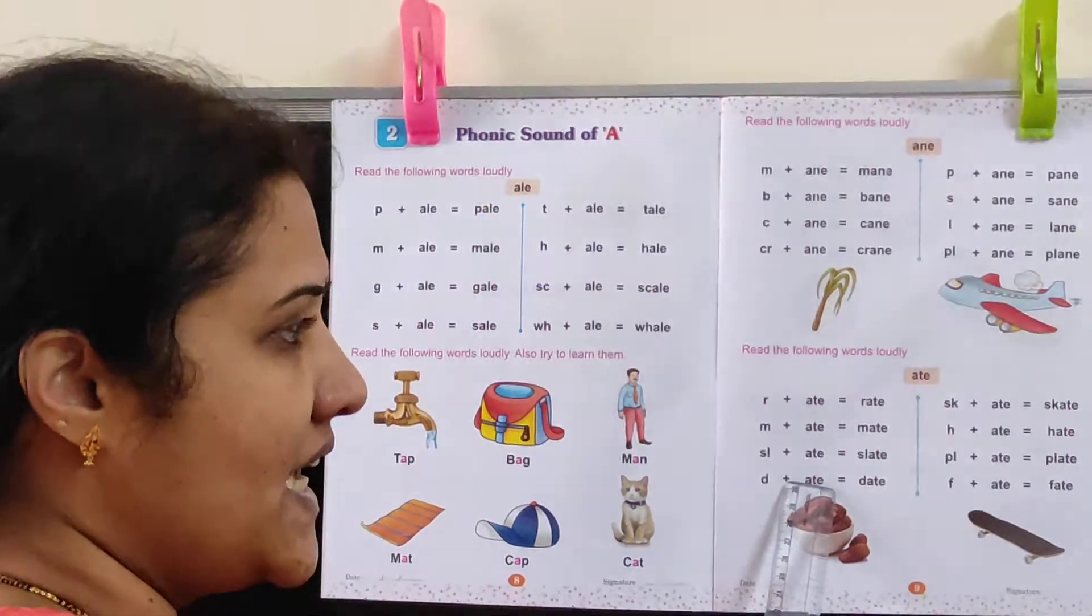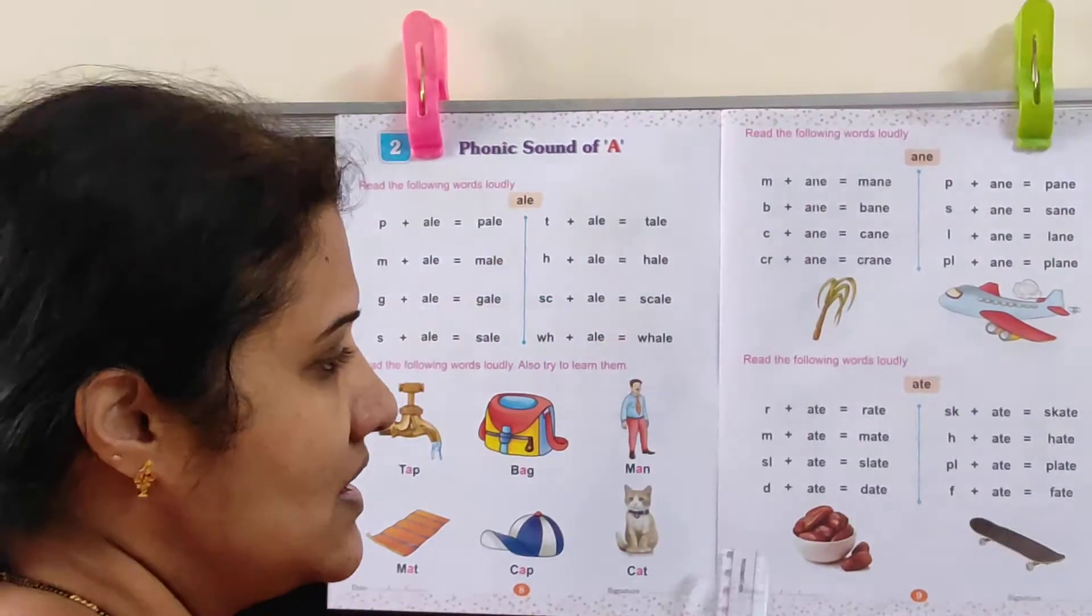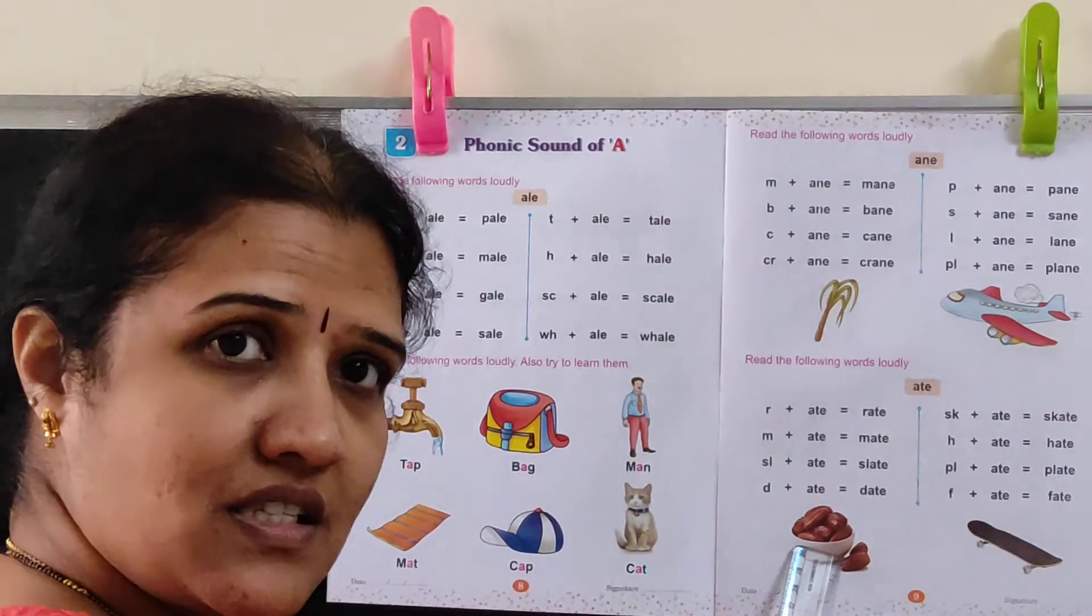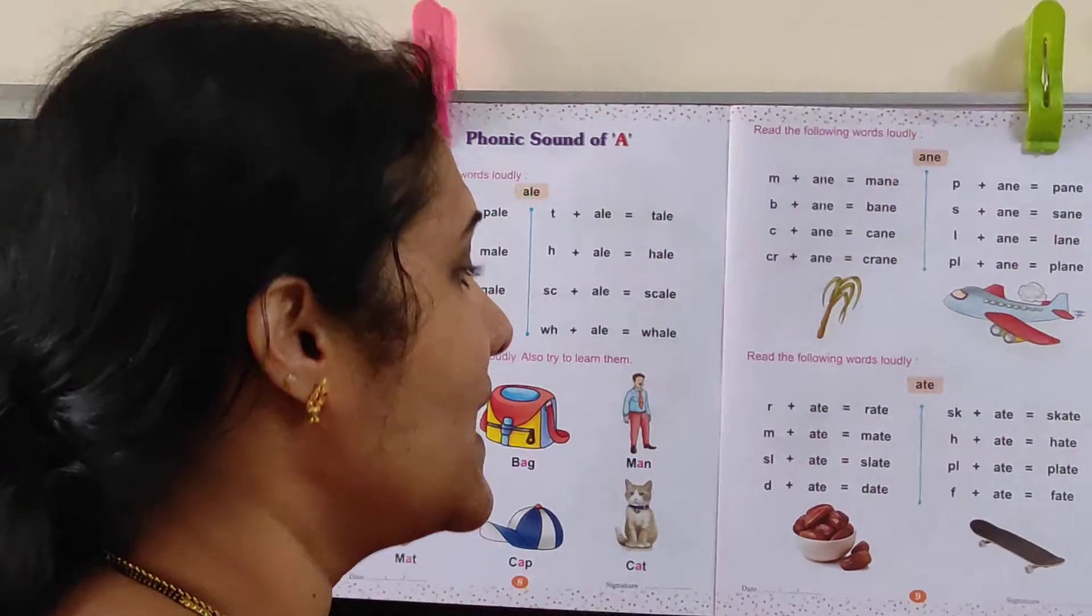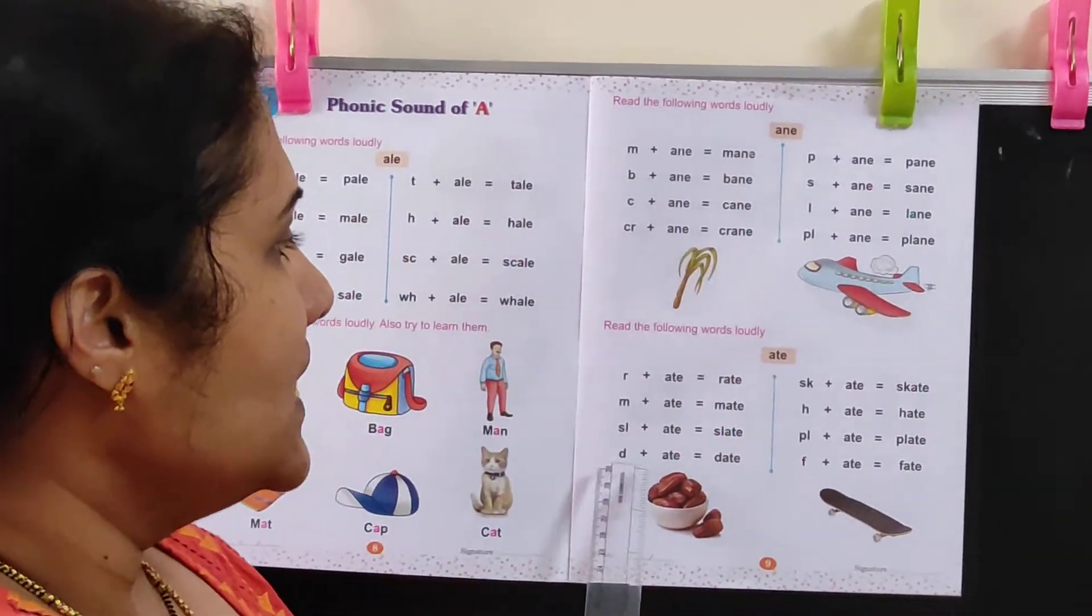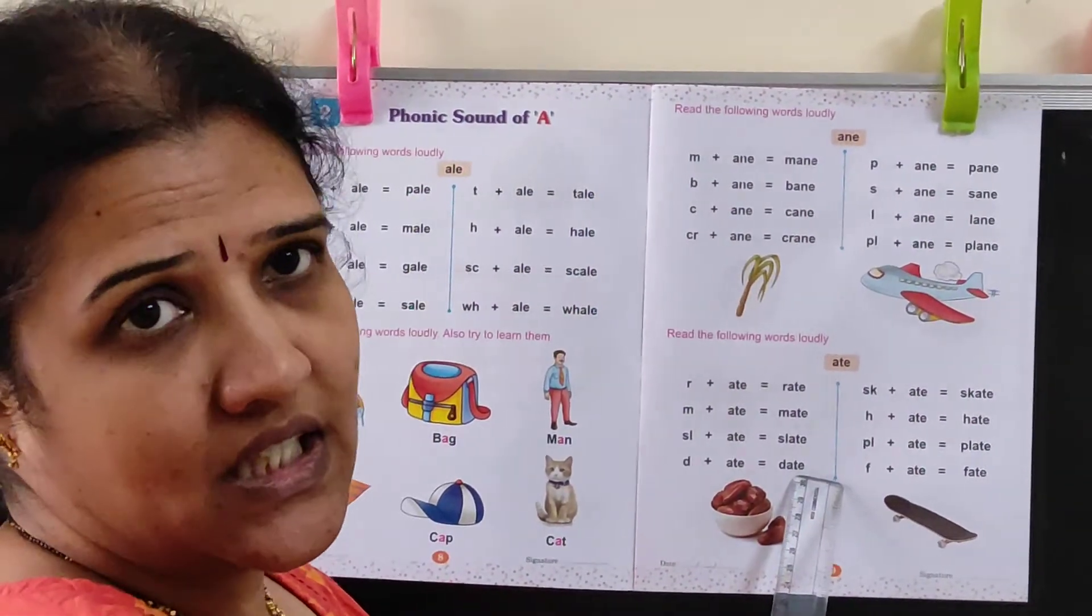Now D-A plus ate is Date. These are called Dates. You eat dates. They are very good in iron. D-A-T-E, Date.